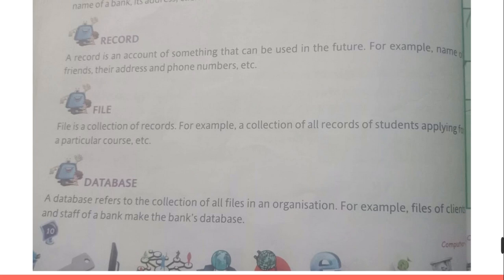For example, a database of a bank contains information about the clients or people who have their account in that particular bank — all the information about them. Or a school may have information about all the students and all the employees working in that school. A database is a large collection of different types of data stored in many files.